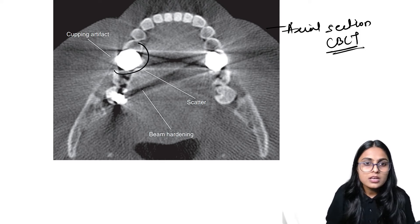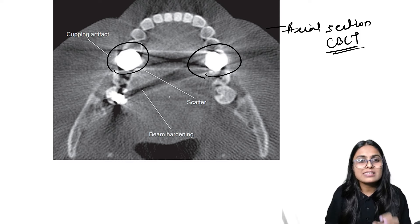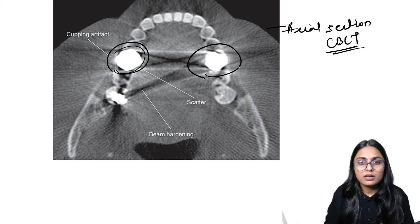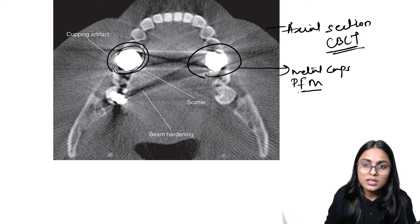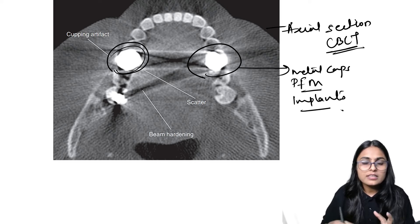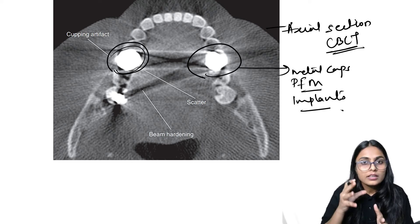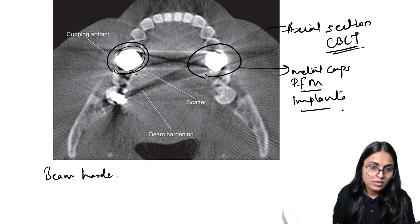When we talk about metallic structures — metal crowns, highly radiopaque structures like metal caps, PFM crowns (porcelain fused to metal), and implants — these are the metallic structures in the oral cavity. X-ray photons get absorbed by these crowns and implants, leading to a specific artifact called beam hardening, which is due to differential absorption of photons.